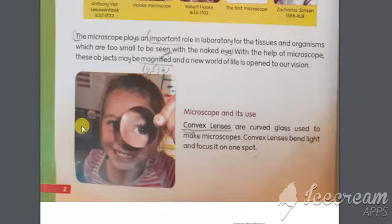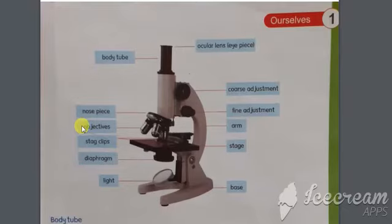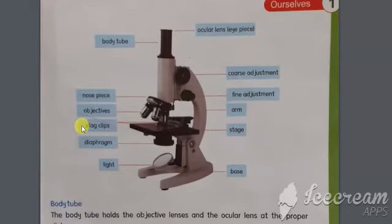Now come to page number three. Here you can see the diagram of the microscope. There are different parts of the microscope such as body tube, ocular lens, nose piece, objective lens, stage clips, diaphragm, light source, coarse adjustment knob, fine adjustment knob, arm, stage, and base.